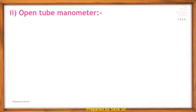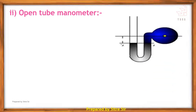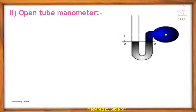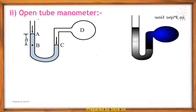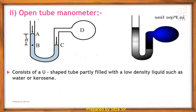The second pressure-measuring instrument is the open tube manometer. In this video, a U-shaped tube is shown with liquid filled inside. If the pressure on both sides is the same, the liquid height is the same. If the pressure is different, the heights differ. The manometer consists of a U-shaped tube partly filled with a low-density liquid such as water or kerosene.